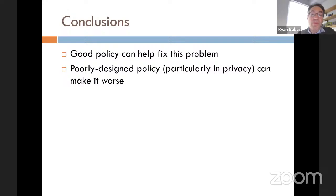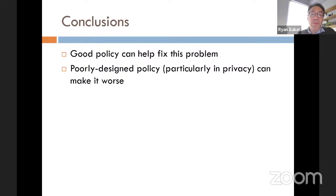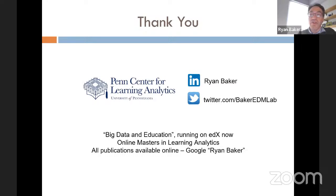This potential cannot be fully reached if algorithms replicate or even magnify the biases already present in society. We need to research and resolve algorithmic bias to develop educational technologies that reach their full potential and, in turn, support every student in achieving their own full potential. Good policy can help fix this problem; poorly designed privacy can make it worse.